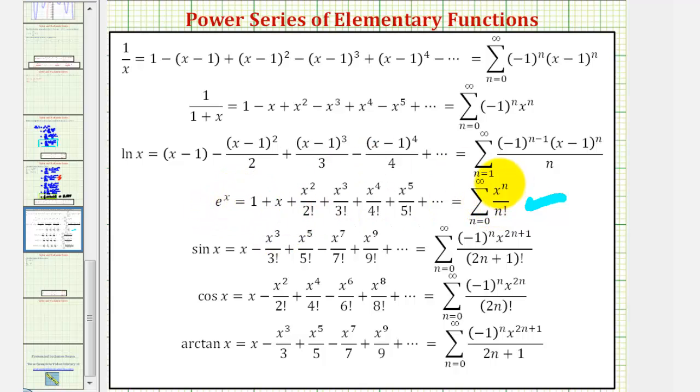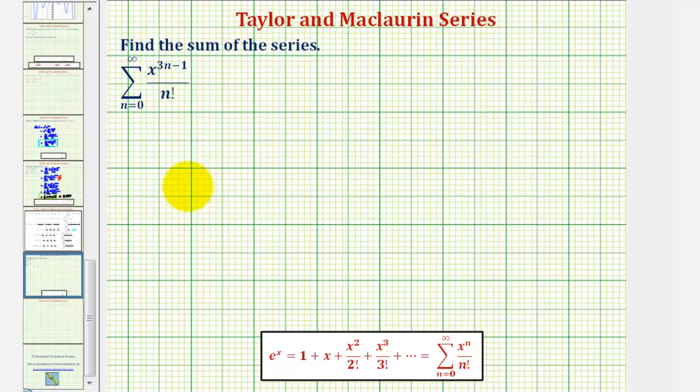Notice both formulas have an n factorial in the denominator. Going back to our example, if our numerator was x to the power of 3n, it would more closely resemble the formula used for e to the x where we have x raised to the power of n.